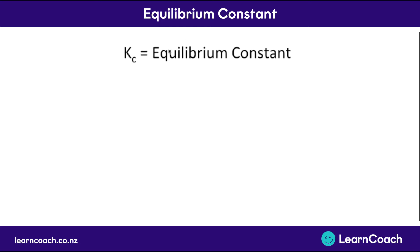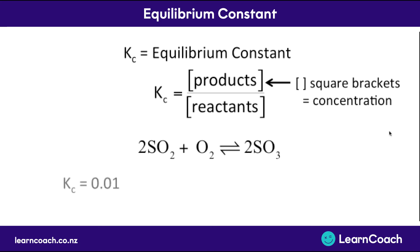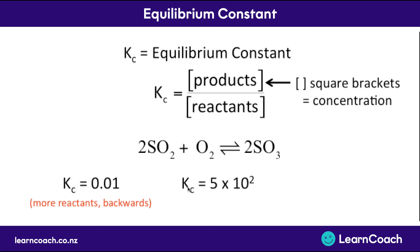All of these factors are tied up in a number called the equilibrium constant. This is a number specific to each equation and it can change depending on temperature. It represents the concentration of products divided by the concentration of reactants. If we look at a reaction and get a Kc of 0.01, that would mean there are more reactants. If the number is less than 1 it means there are more reactants than products when we reach the state of equilibrium. If Kc is more than 1, like 500, then there are going to be more products than reactants.